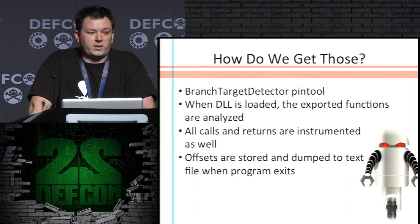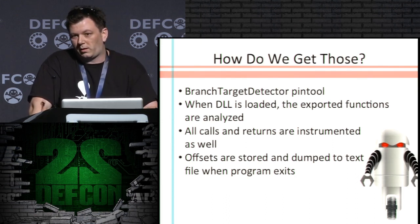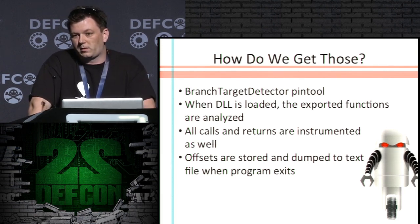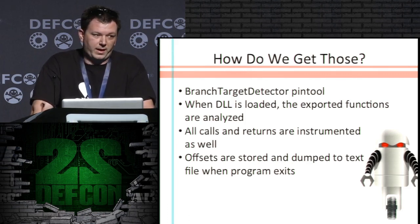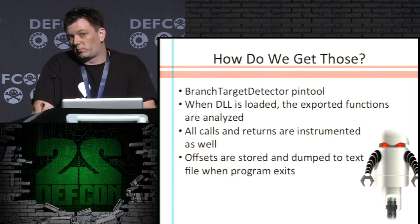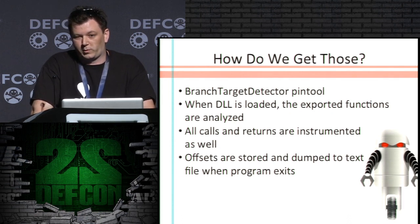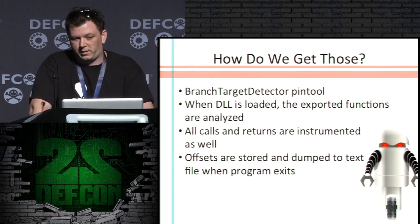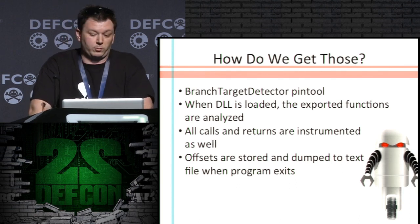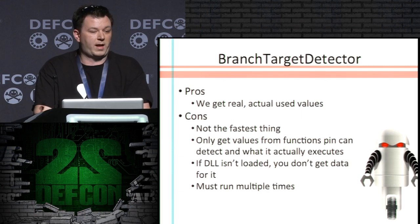The first thing I did was build a PIN tool to give me those addresses. When a DLL is loaded, it iterates through all the exported functions, analyzes them, and finds the calls. If it's a direct call, we put the target on the whitelist and the instruction afterwards. If it's an indirect call, just the instruction afterwards because we don't know where it goes yet. Additionally, all calls and returns are instrumented on the instruction level, because not every function is in the exported ones. These offsets are stored when the program ends, dumped to a text file, with post-processing to add them to the whitelist and remove duplicates.